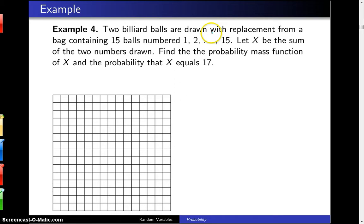Now because the two billiard balls are drawn with replacement, this is equivalent to rolling two 15-sided die, and that's why you see this picture that is kind of reminiscent of what you saw in the last chapter when we were rolling two dies.